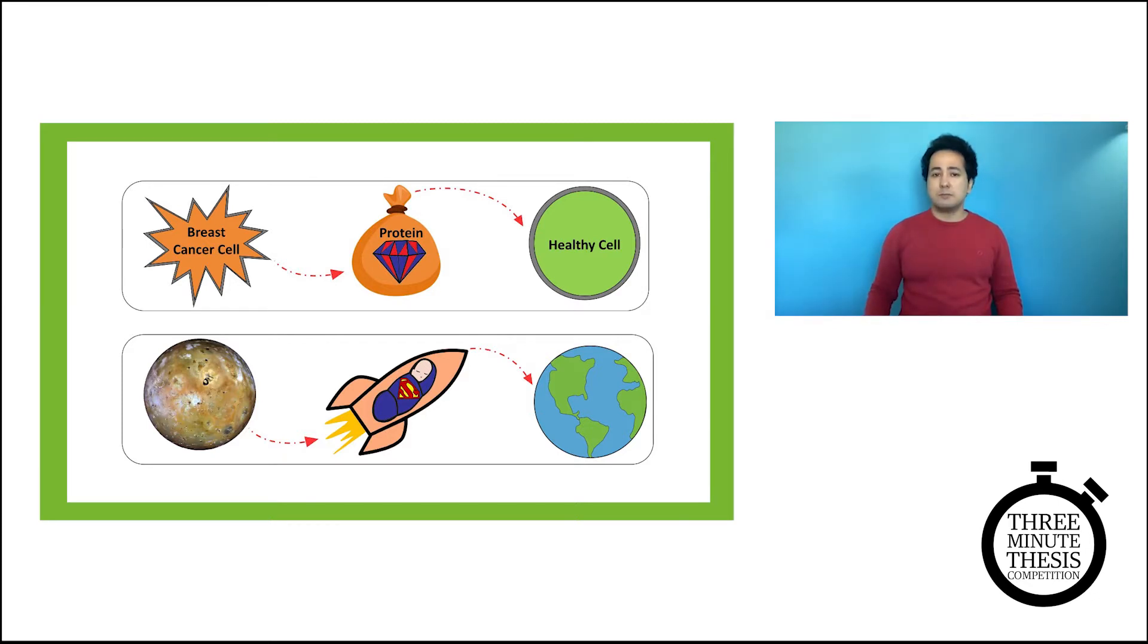I believe Superman's story can help explain that. Superman was from a foreign planet, much like a cancer cell is foreign to our body. Moments before their planet destruction, Superman's parents put their most valuable thing, their baby boy, inside a spaceship and released him to outer space for the sake of his survival.